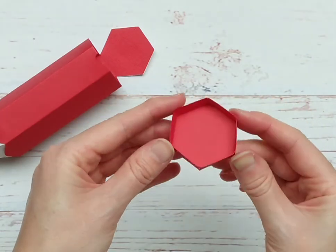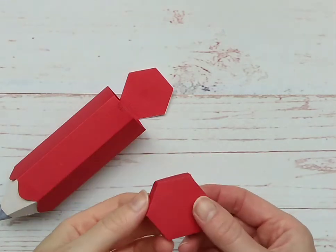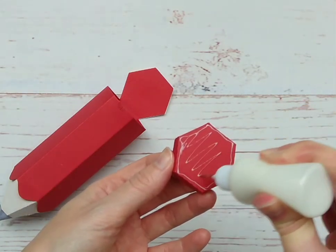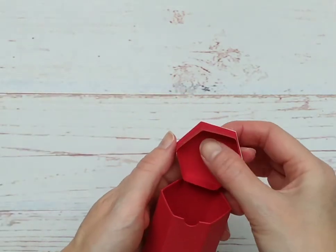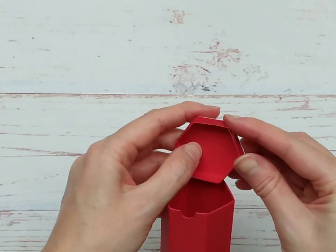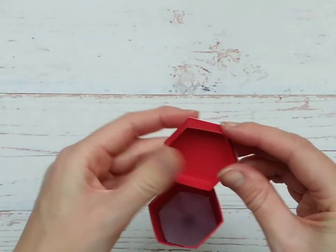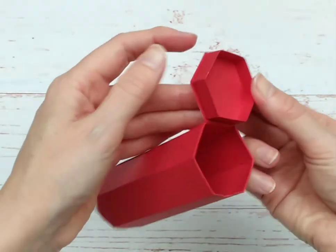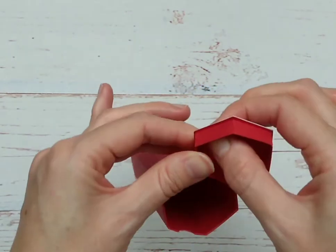Once you've finished that, it should look like this. This now needs to be stuck to the inside of the lid, or the underside of the lid. And you need to make sure that you get it central, with a nice border around the edge, a nice even border. It should be about a millimeter all the way around. Press it down nice and firmly.